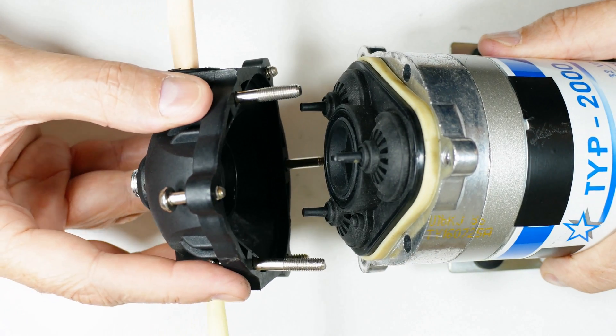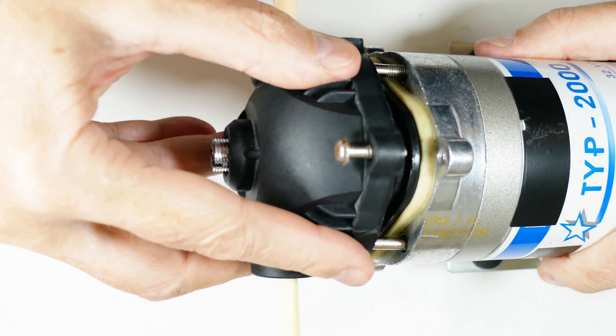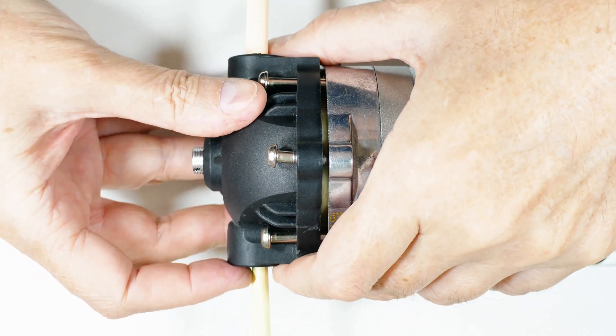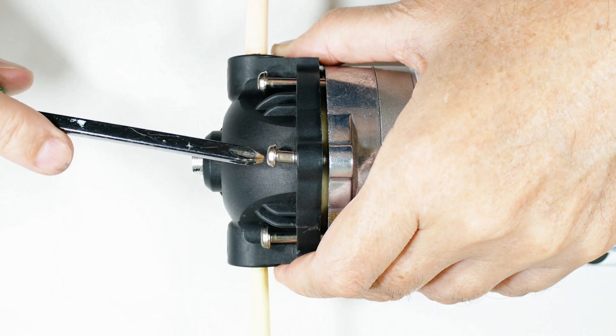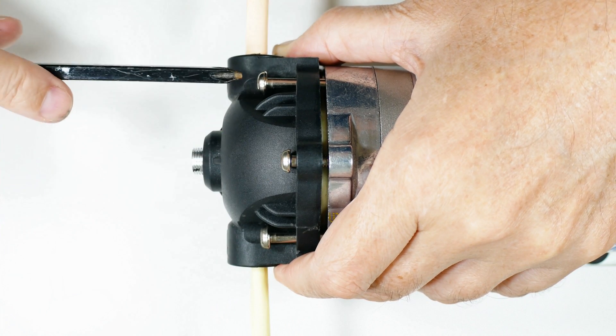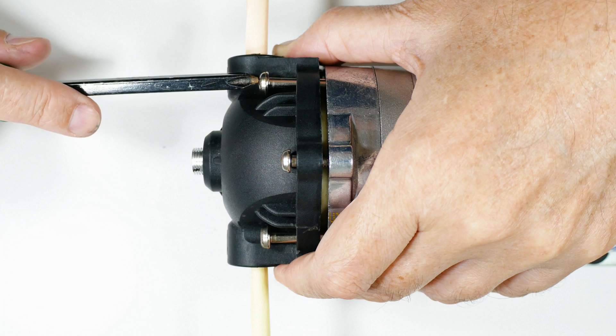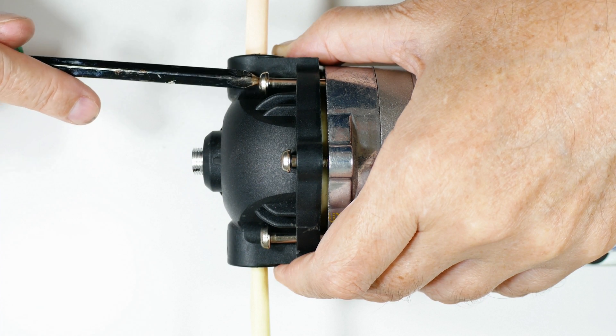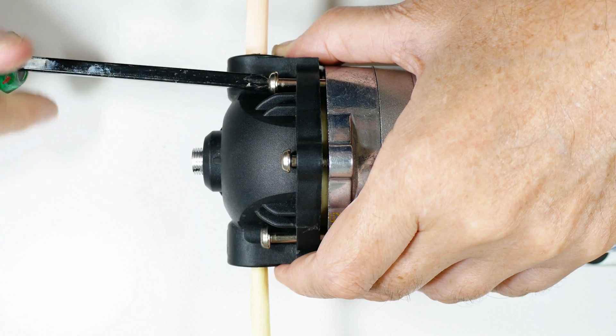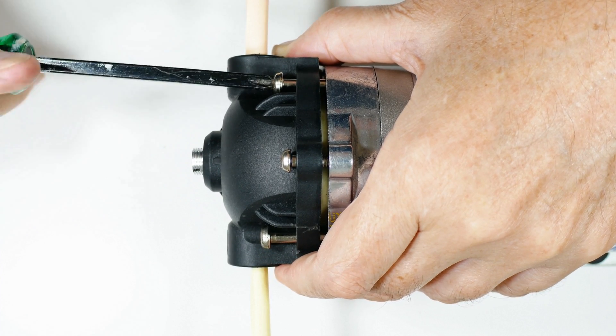I've seen these high pressure diaphragm pumps used in chemistry labs to circulate chemicals and in manufacturing for similar purposes, and in RO water filters - that's one of the most common places to find them. I'm using them for a solar pump project to pump relatively pure water to a water tank.